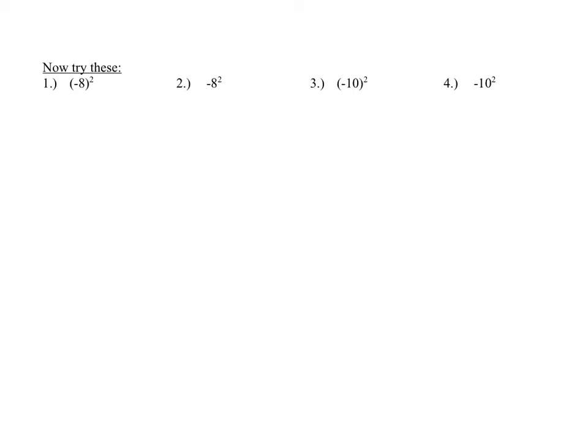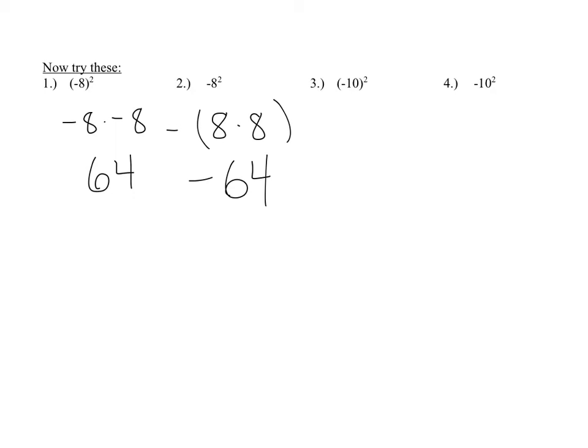If you'd like to pause the video and try the next 4 to make sure you understood, do it, then come back and check. Number 1 has parentheses, so that means negative 8 times negative 8, which is positive 64 — negative times a negative is positive. The next one is minus 8 squared: we do 8 times 8 first and then put that negative sign on the outside, so the answer is negative 64.